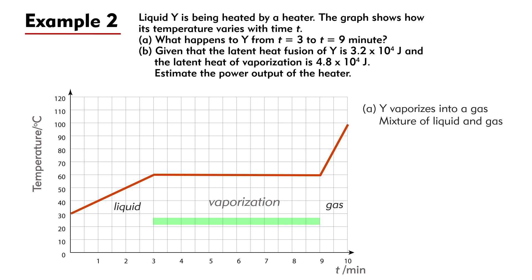Part B. Since Y changes from liquid to gas, we should use the latent heat of vaporization. That is, heat supplied is Q = 4.8 × 10⁴ Joules. The time for vaporization is T = 9 - 3 = 6 minutes = 6 × 60 seconds = 360 seconds.